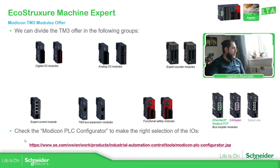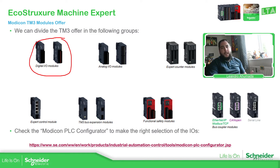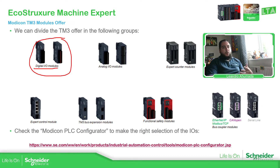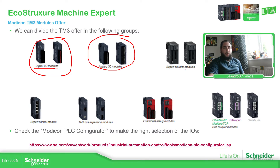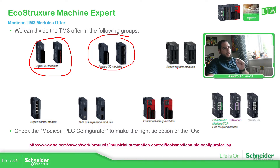We have four categories. For digital information — true or false, one or zero — we have the digital I/O modules. Then if we want to read temperature or voltage or current from a sensor, we have the analog IOs. And then recently we have these expert content modules. This one is not for the M221 — it's only for the M241, M251, or the M262. There is also a slight difference between these modules: one is only for the M262, related to events.